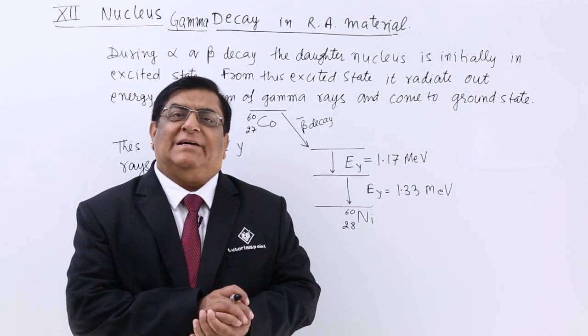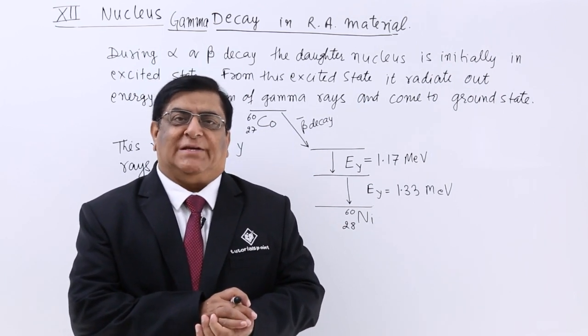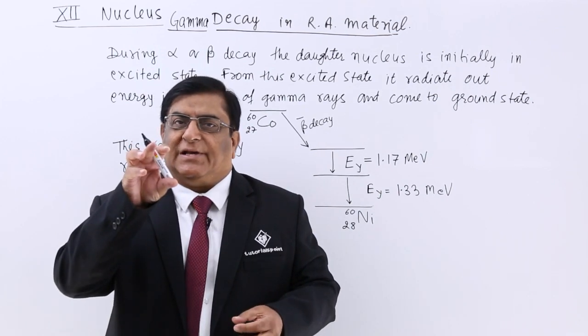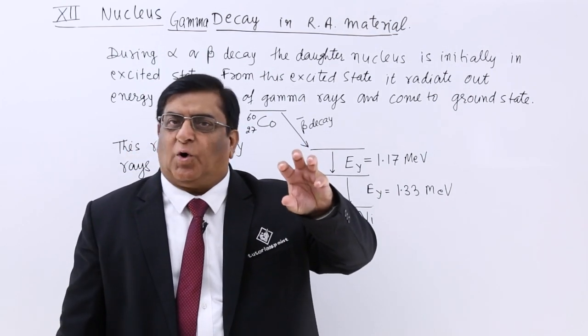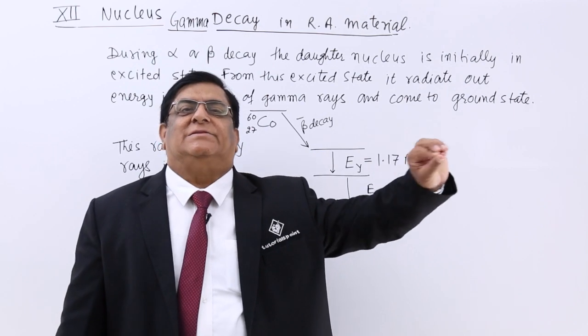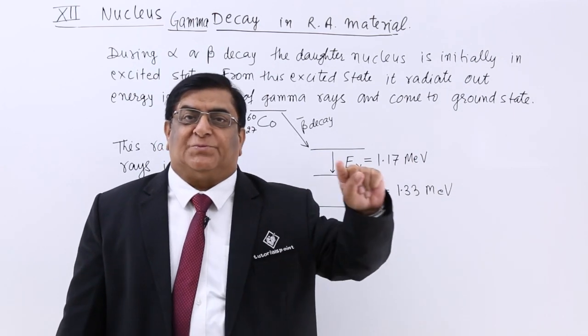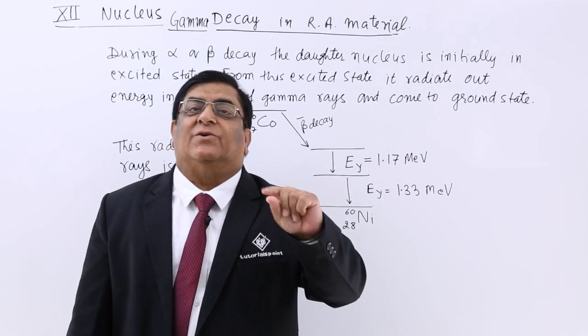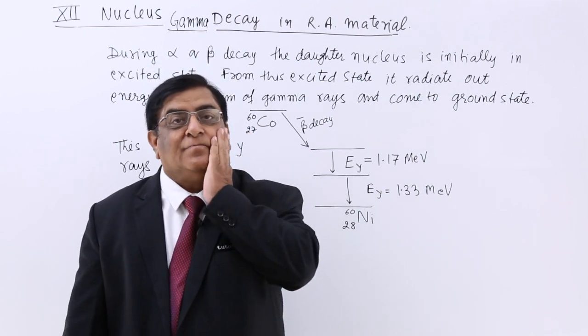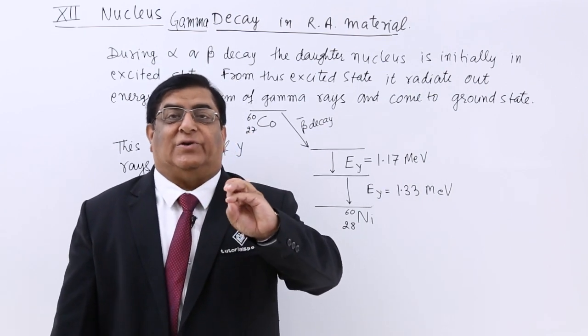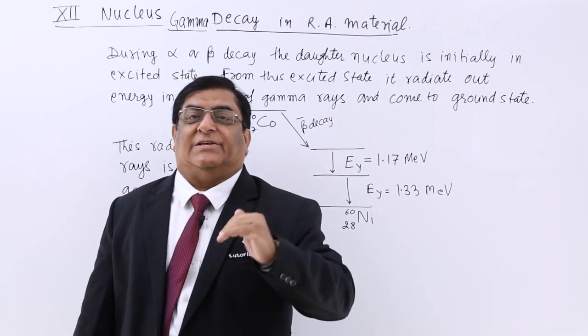Now whenever there is alpha decay or beta decay from the mother nucleus, a daughter nucleus is born and a particle is out. During this process some energy is also released. That energy is released and there are stages of that.